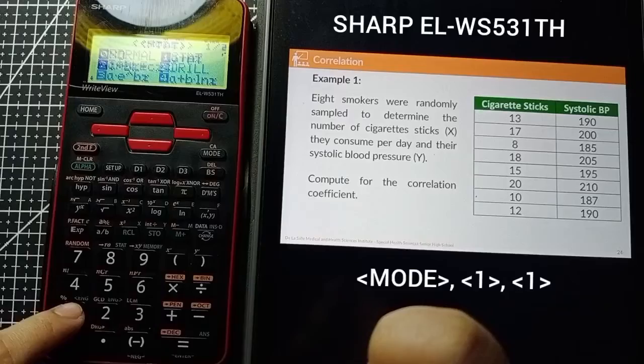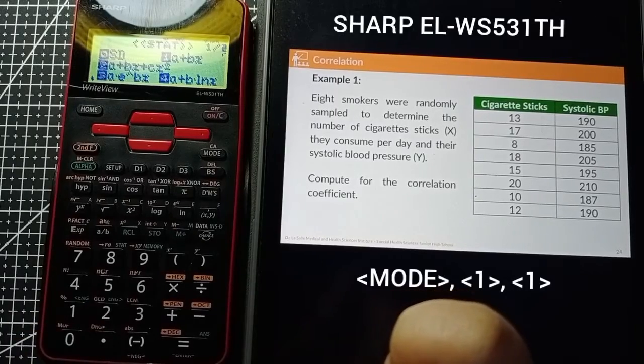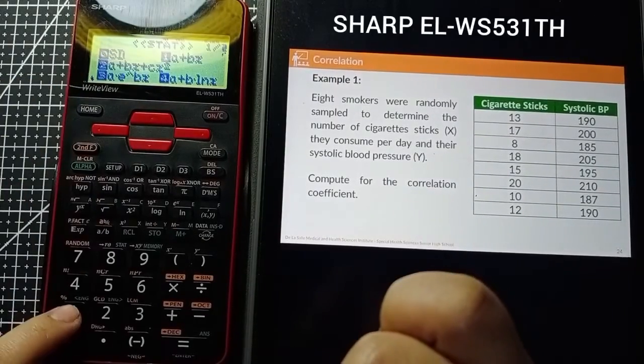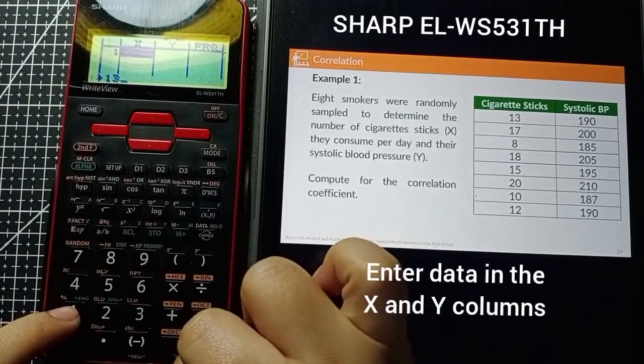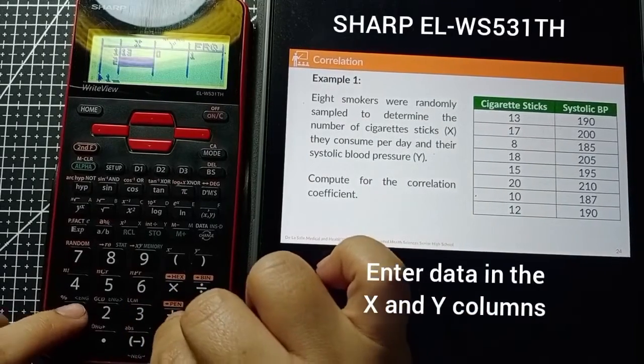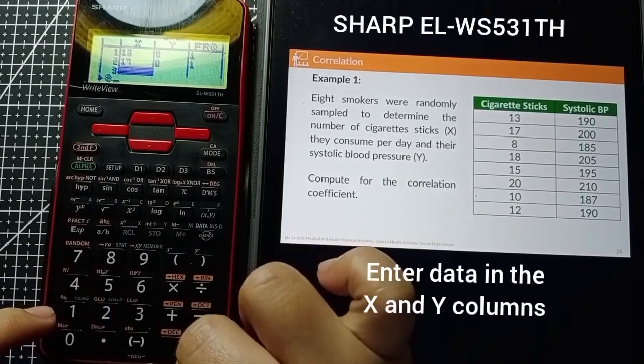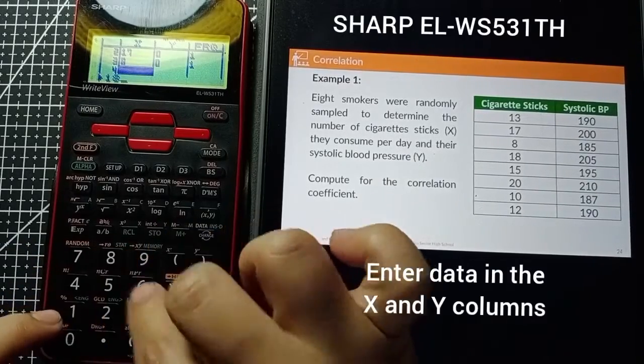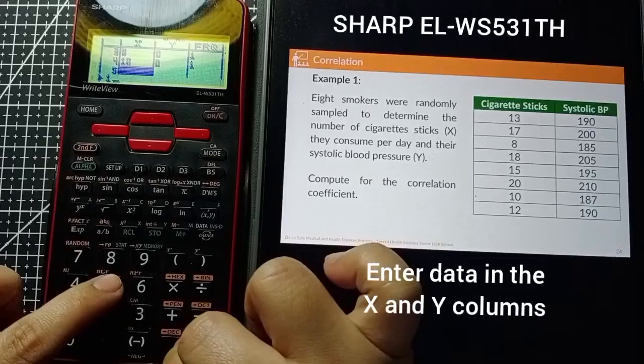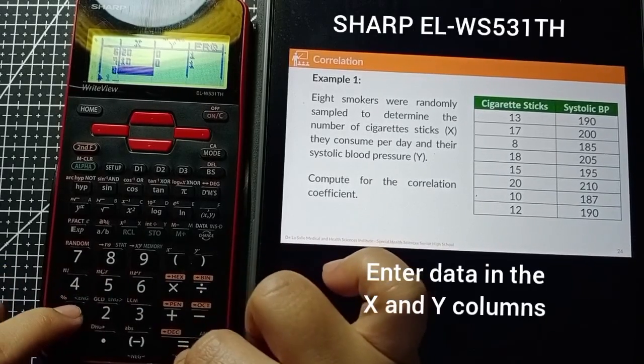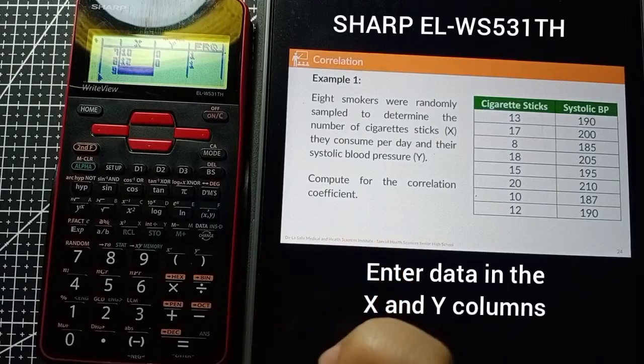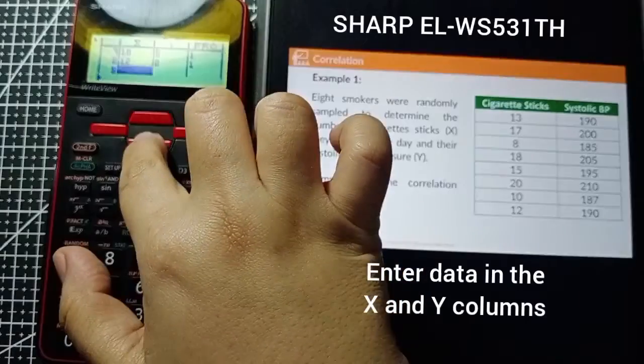Select 1, then 1, then enter the data in the X and Y columns. Press on the number and then hit the equal sign to save the data. Once you're done with the X column, you can proceed to the Y column.